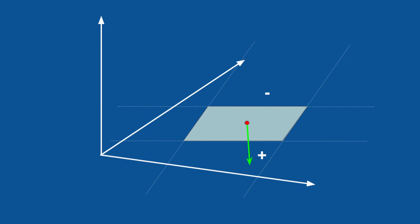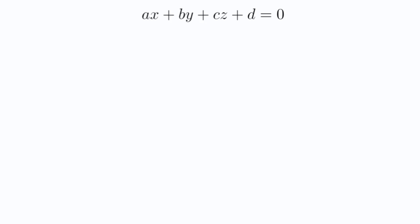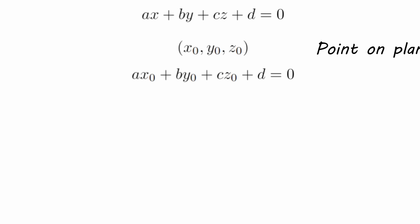If we flip the normal we have almost the same plane except that the two sides switch roles — negative becomes positive and vice versa. The general form of the plane equation in 3D is as follows. Notice that a, b, c and d are scalar numbers and x, y, z is a 3D point. This means we can take a point x0, y0, z0, substitute it into this equation, and if the result is 0 it means that point lies exactly on the plane. If it's not 0, the point is on one of the sides depending on the sign of the result.